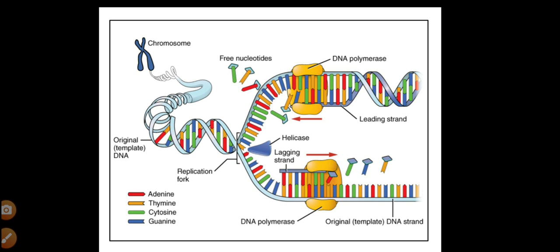These enzymes cut the DNA at one strand and can rotate to release the tension according to the unwinding. That is why they are very important enzymes — topoisomerases.